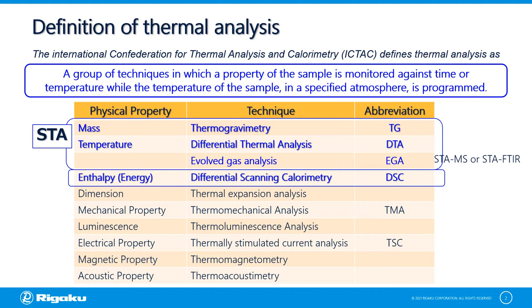The International Confederation for Thermal Analysis and Calorimetry defines thermal analysis as a group of techniques in which a property of a sample is monitored against time or temperature, while the temperature of the sample in a specified atmosphere is programmed. For changes in mass and the temperature difference between a sample and a reference material, the simultaneous thermal analysis or STA, composed of thermogravimetry and differential thermal analysis, is used.